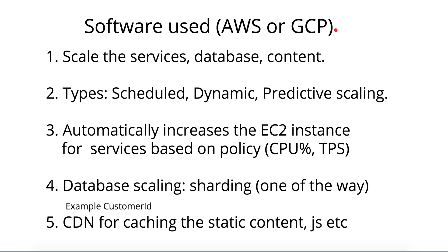Predictive scaling is newer and is done through machine learning. AWS can understand your system's behavior in a predictive way — for example, using the last five years of logs to understand when your system experienced high traffic. If the logs show that during Diwali holidays there was a traffic spike, the machine learning algorithm automatically crawls the application logs and determines to add one more EC2 instance during that time. That is called predictive scaling.